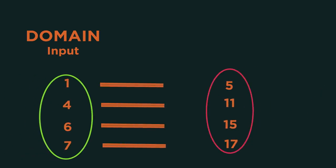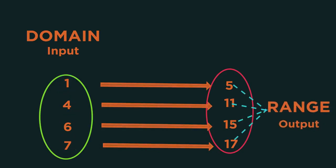The domain can be a range of values, so here it's 1, 4, 6, and 7. The range are the output values from the function. So what comes out when we put our domain values in?